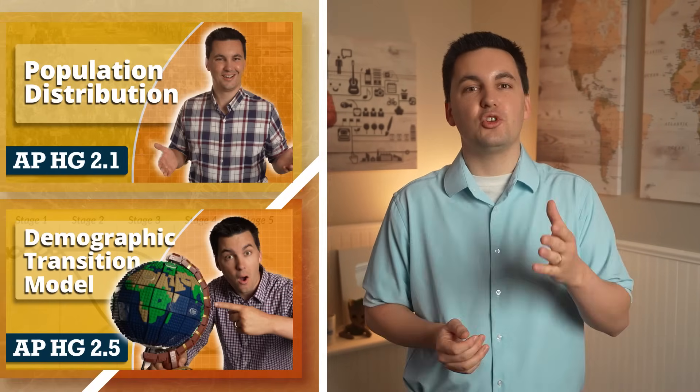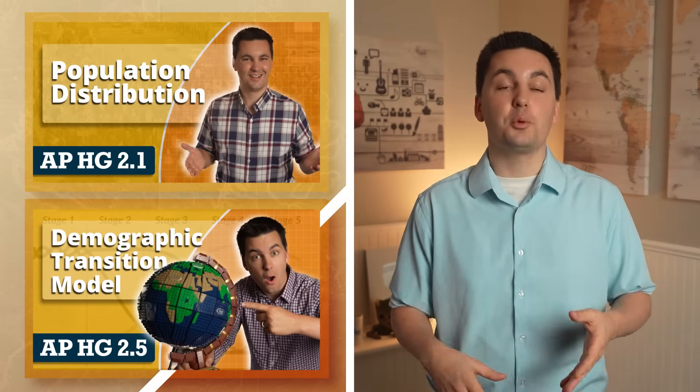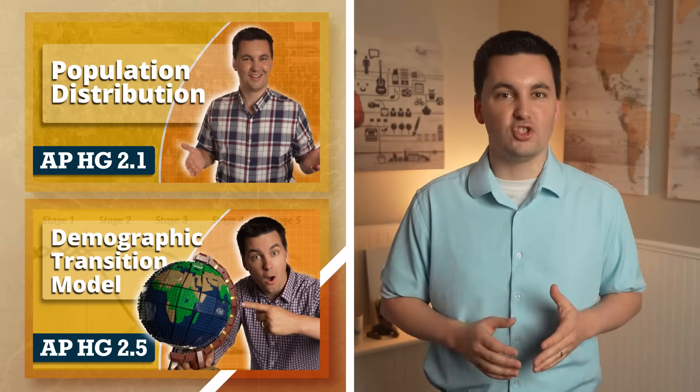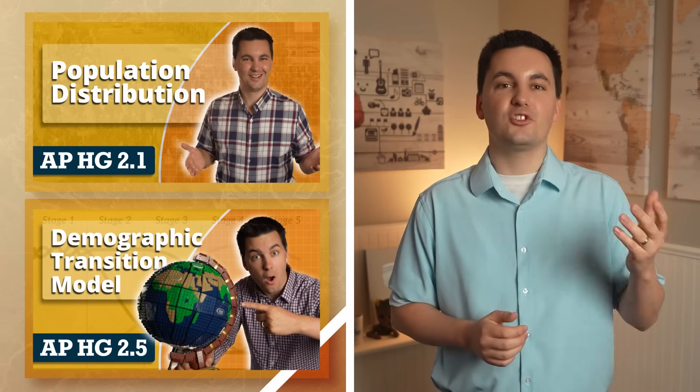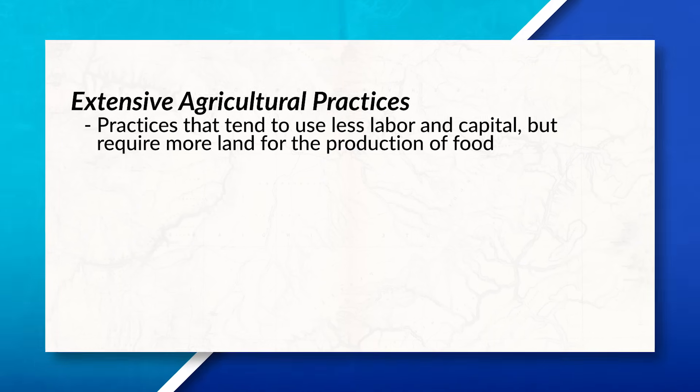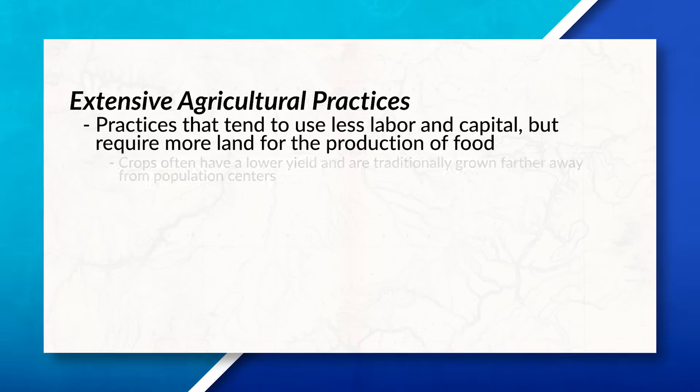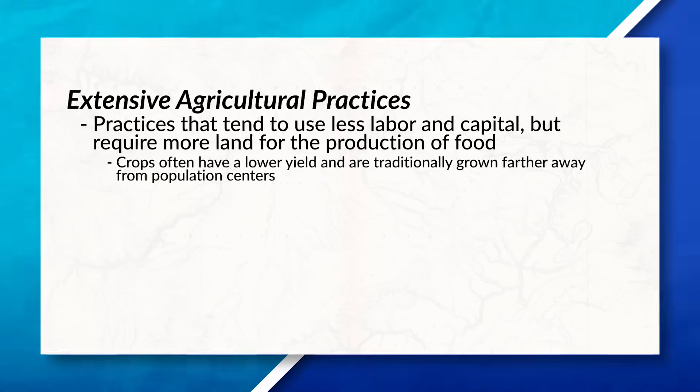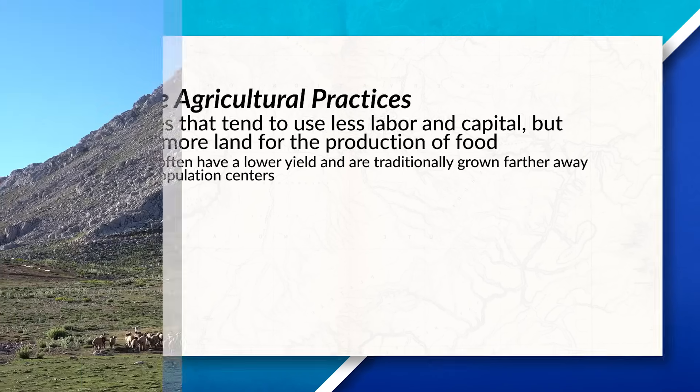This connects back to our unit two concepts, where we learned about the demographic transition model and different densities such as agricultural density. Two other concepts we can connect to are intensive and extensive agricultural practices, last discussed in our unit five topic one video. Extensive subsistence agricultural practices traditionally tend to use less capital, fewer machines, and human labor, but do require more land.